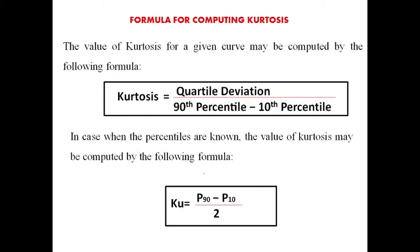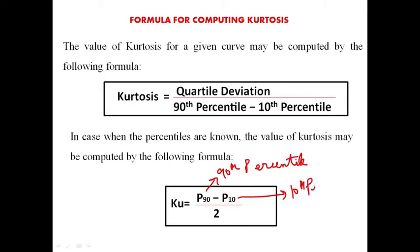The formula for computing kurtosis: the value of kurtosis for a given curve may be computed by the following formula. Kurtosis equals quartile deviation divided by the 90th percentile minus the 10th percentile. In case when the percentiles are known, we can calculate the value of kurtosis as: KU = P90 minus P10, where P90 is the 90th percentile and P10 is the 10th percentile.